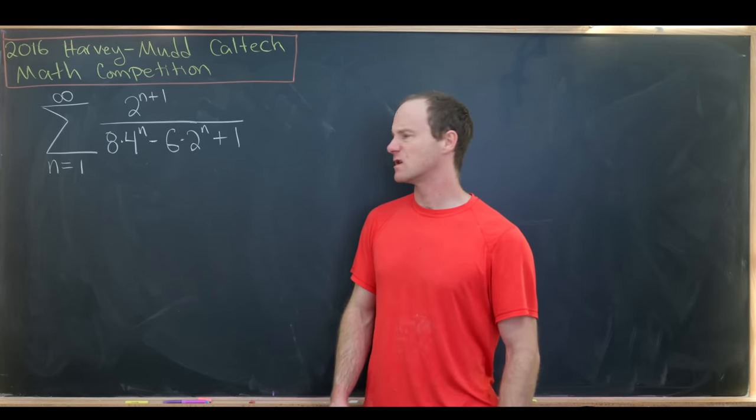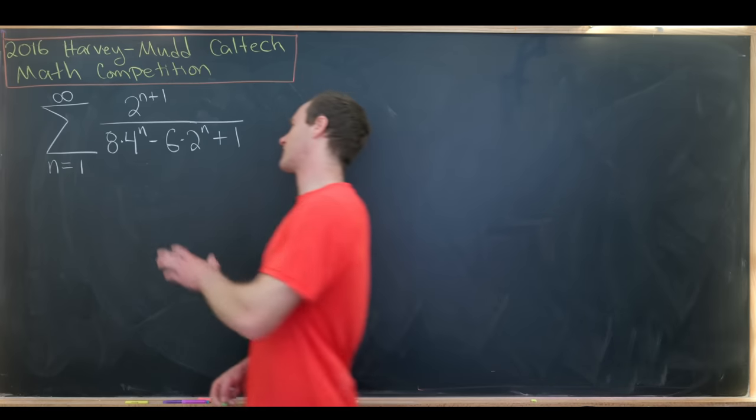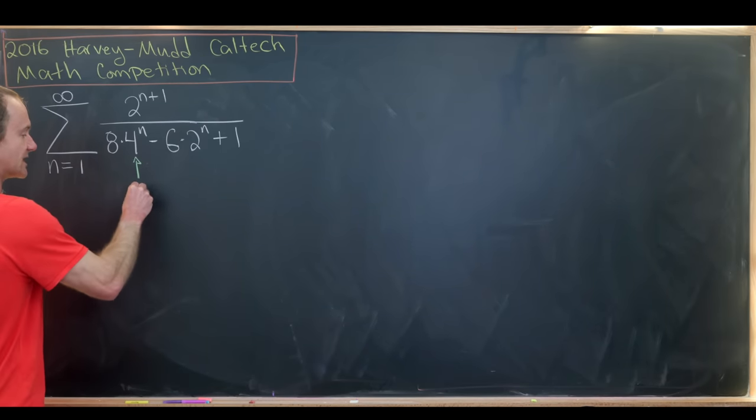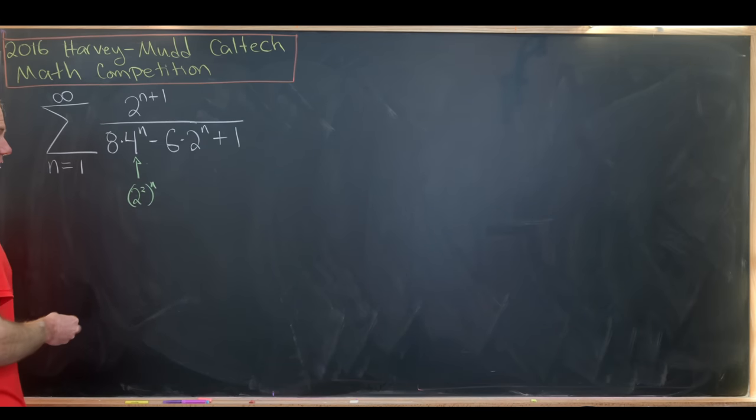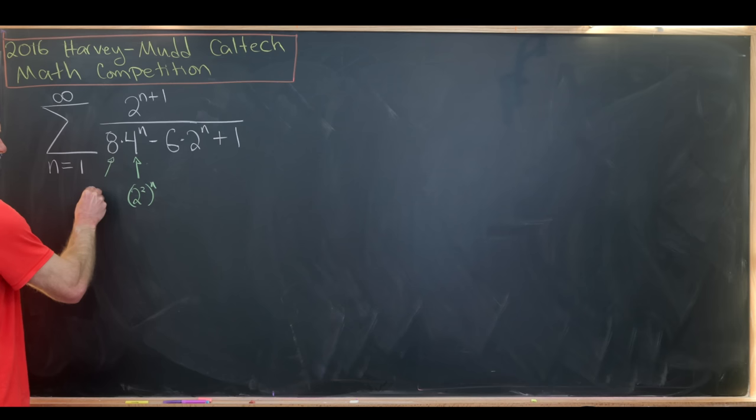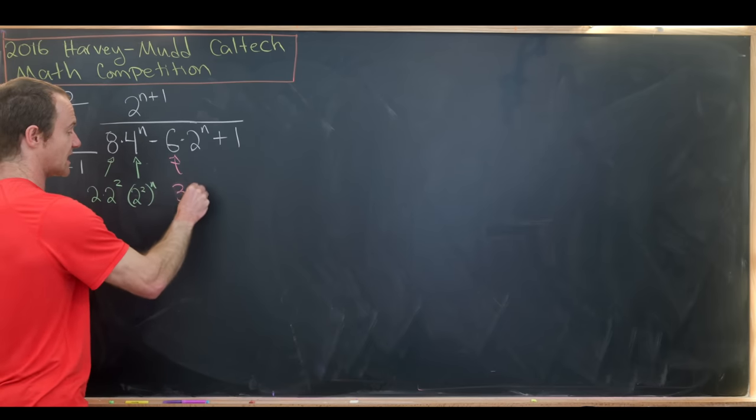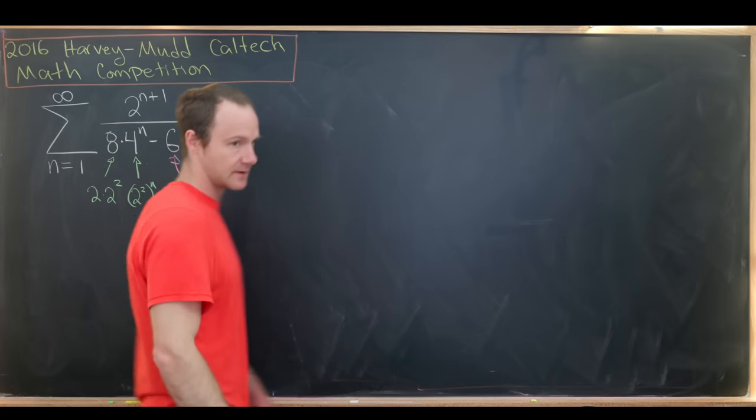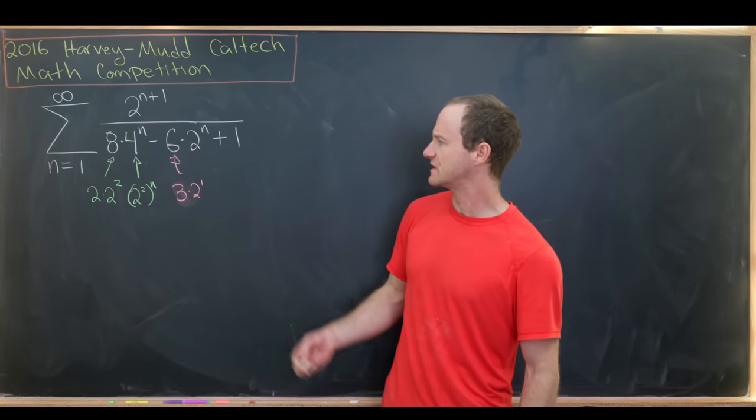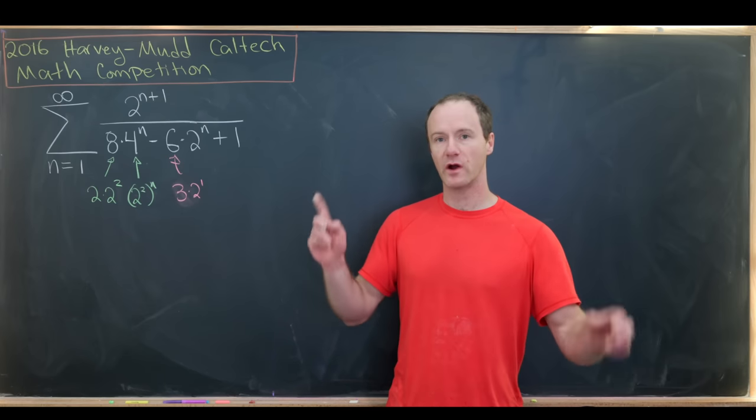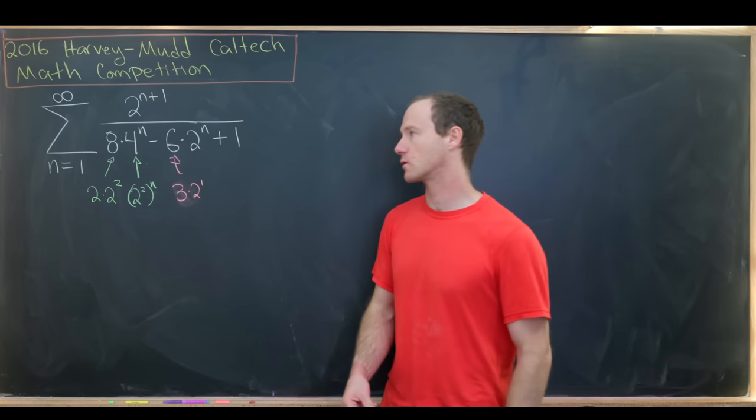Maybe the most interesting thing to notice at first is that this 4^n can be rewritten as (2^2)^n, and then this 8 can be written as 2 times 2^2, whereas this 6 can be written as 3 times 2^1. So that gives us some motivation that perhaps in the denominator we have a quadratic expression where the variable is some power of 2.